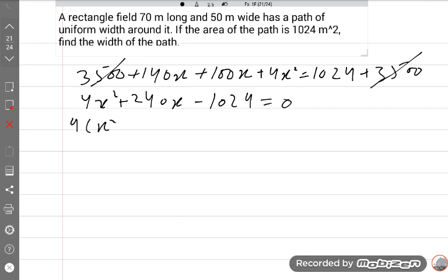So the remaining is 4x² + 240x - 1024 = 0. We take 4 common: x² + 60x - 256 = 0. Why we take common? For easy solving, because if the numbers are around 100 and 1000, it will be easier to solve.